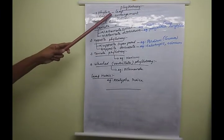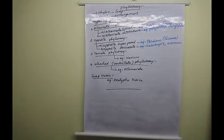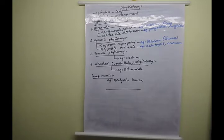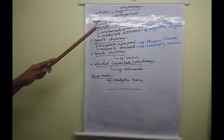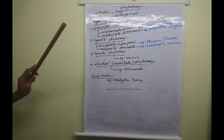The major function of phyllotaxy is to avoid overcrowding of leaves and ensure all leaves receive sufficient sunlight. The leaves are arranged in certain patterns on the stem. There are four types of phyllotaxy mentioned in the syllabus: alternate phyllotaxy, opposite phyllotaxy, ternate phyllotaxy, and whorled or verticillate phyllotaxy.